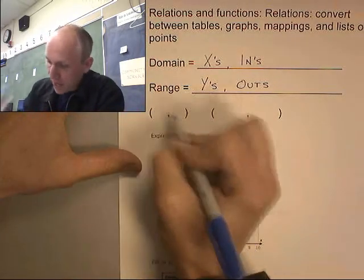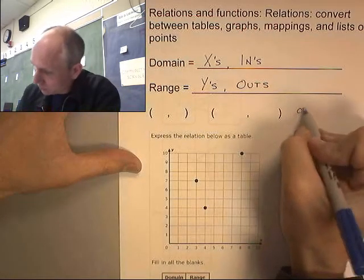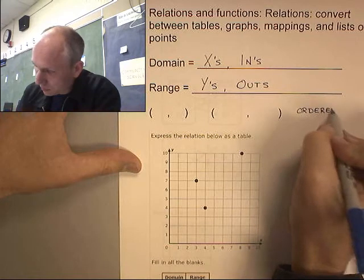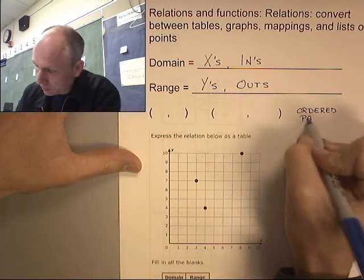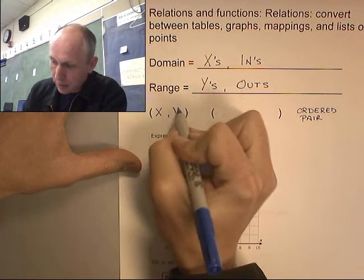So this is what it looks like. If I have a set of an ordered pair, this is an ordered pair. This is X. This is Y.